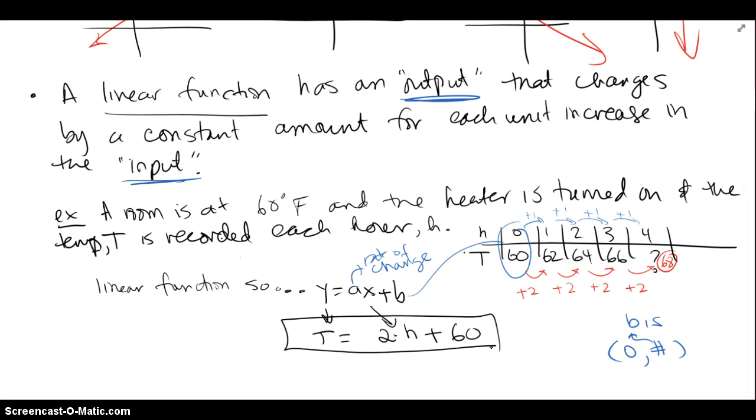Again, our output was y, I called it T, our input was h, I put that in for the x value, and the a is 2, and the b is 60 in this case. And I could test this out, if I say h is equal to 4, for the 4th hour, basically what happens, I can have T equals 2 times 4 hours later, plus 60, and that's going to give me the 68 degrees that we had guessed.